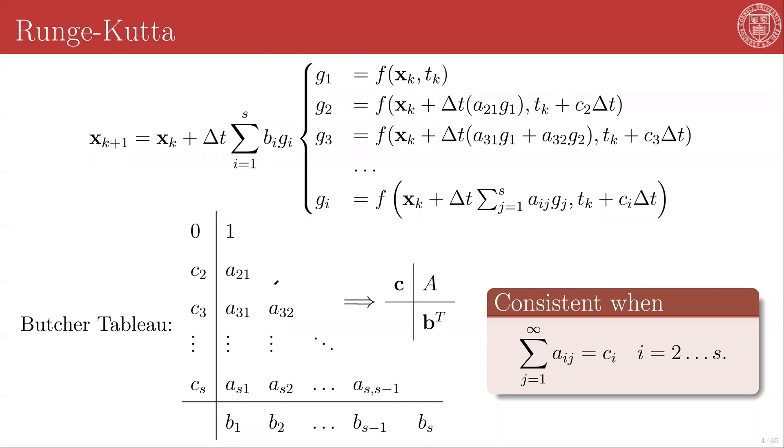So here the Butcher tableau is shown as lower triangular, implicitly making all of the upper triangular terms zero. If that is the case, if A is lower triangular, then the Runge-Kutta method defined via that A is going to be explicit, because none of these evaluations require looking forward to subsequent G functions. They only rely on previously evaluated G functions.